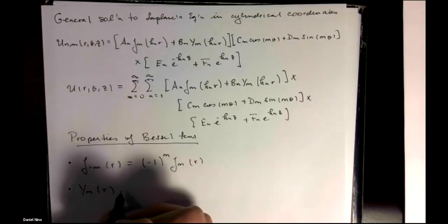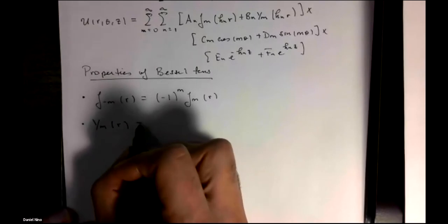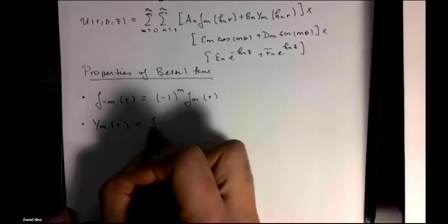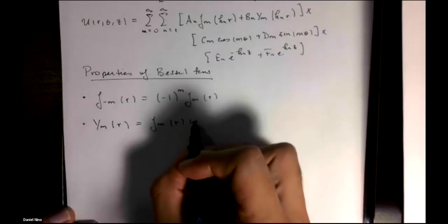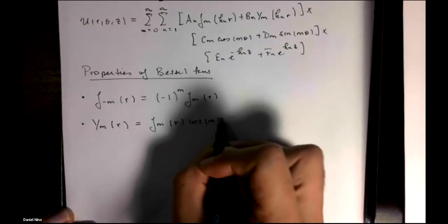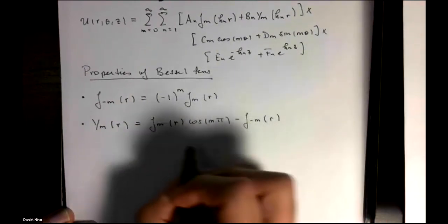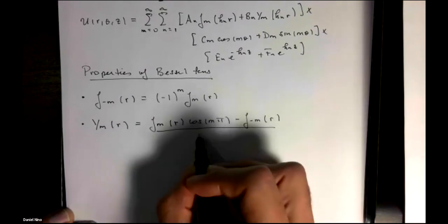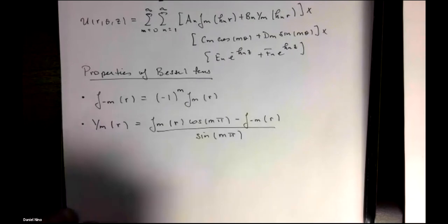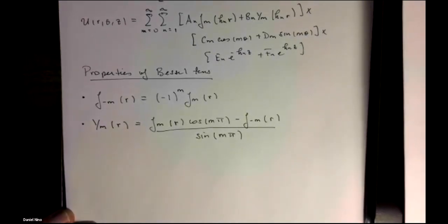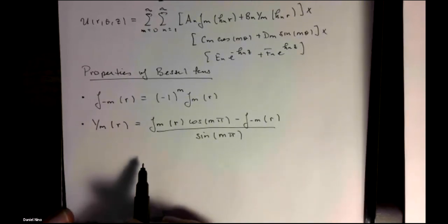The Bessel function of the second kind of order m can be expressed in terms of the Bessel function of the first kind of the second, by the following equation. So these two are equivalent.